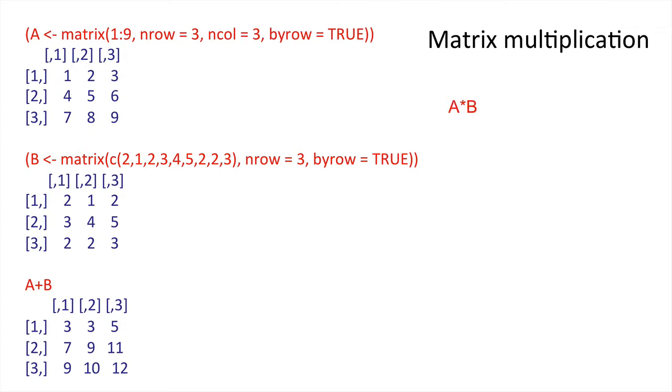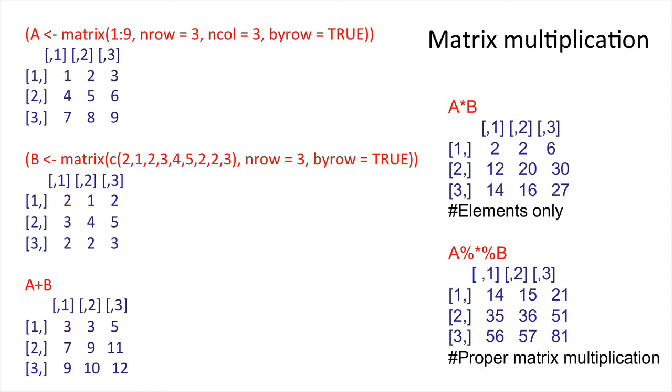However, here's an important point. If we simply ask A times B, then we get a rather unusual form of matrix multiplication in which the individual elements are multiplied by one another. Note that this isn't the standard form of matrix multiplication. In order to get classical matrix multiplication, what we need is the percentage operator, because using this we get the classical matrix multiplication.